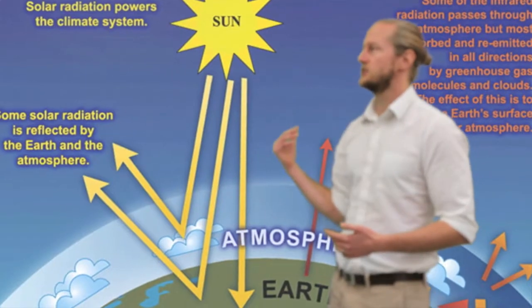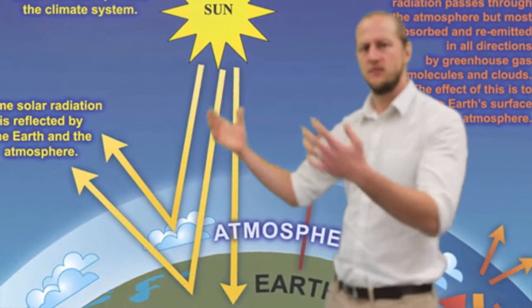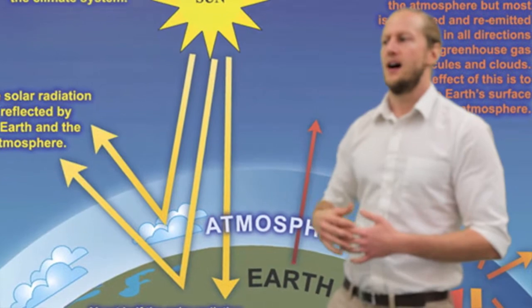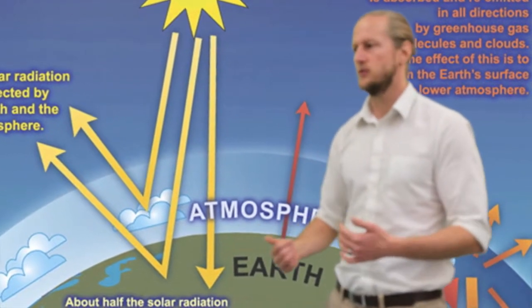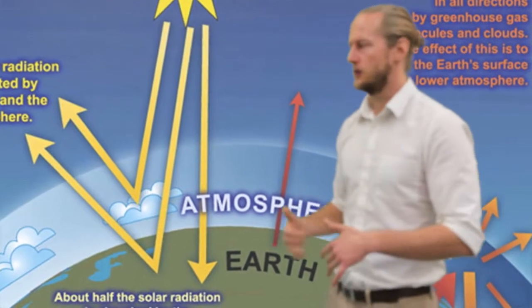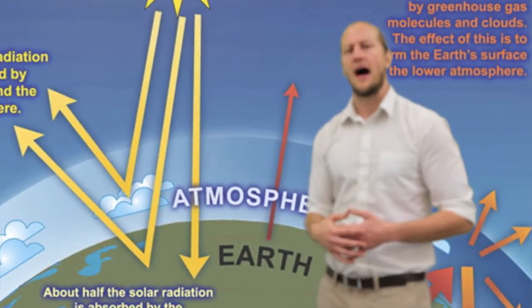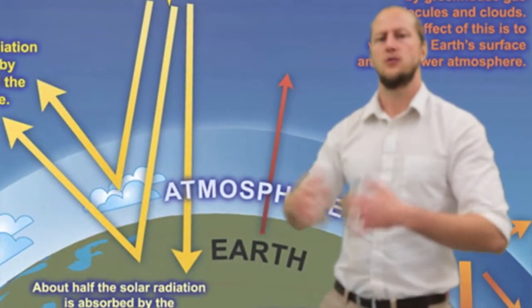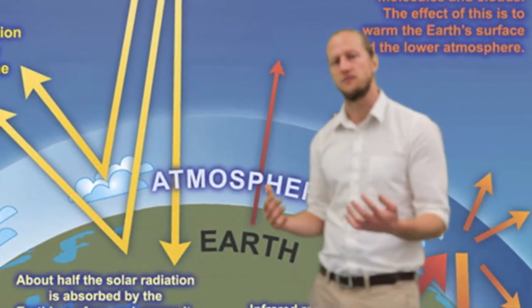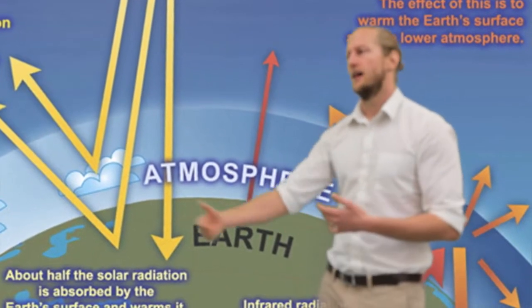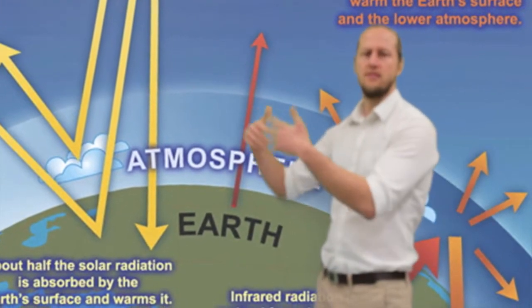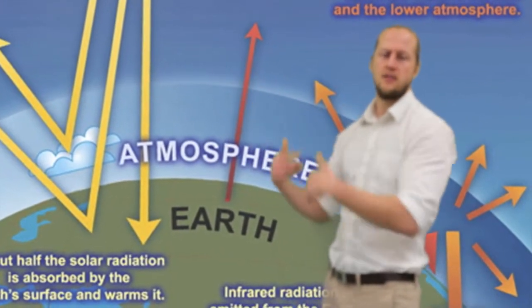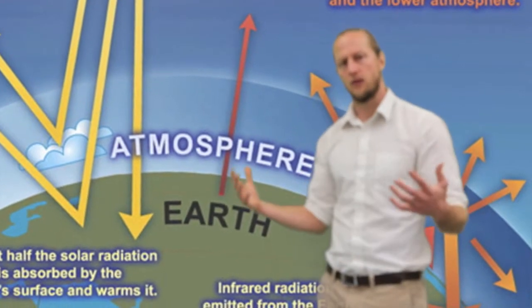Climate change is when the sun's radiation comes in through our atmosphere and it hits our Earth and some of it is absorbed by the oceans, by the land, and a good deal of it is radiated back out towards outer space. Now, what happens with the greenhouse effect is that carbon dioxide, methane, and other greenhouse gases, they get in the way of this radiation and it is reflected back down to Earth and our globe warms.